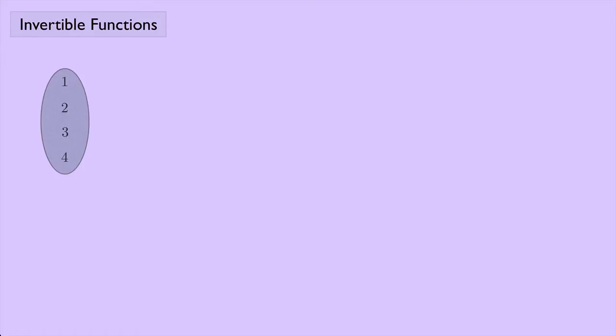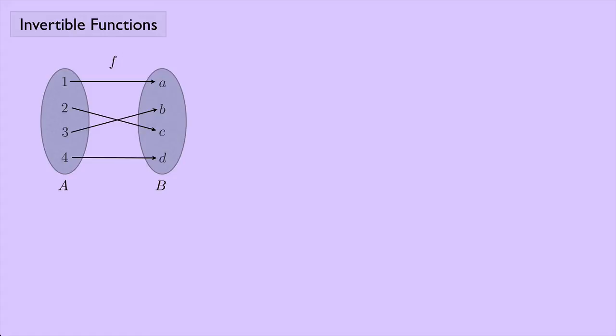Suppose I have a set A that consists of the numbers 1, 2, 3, and 4, and I have a set B which consists of the letters A, B, C, and D, and I define the function F to map 1 to A, 2 to C, 3 to B, and 4 to D.